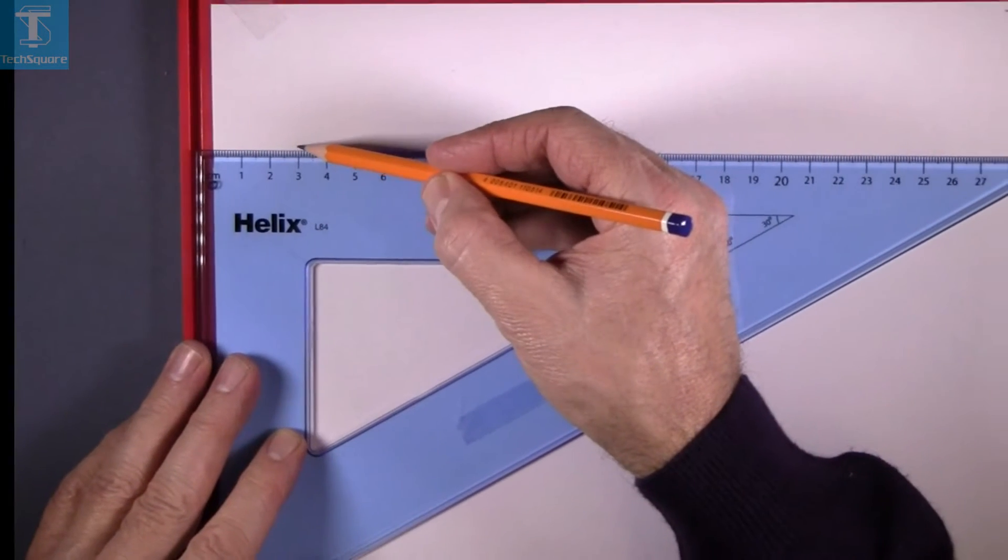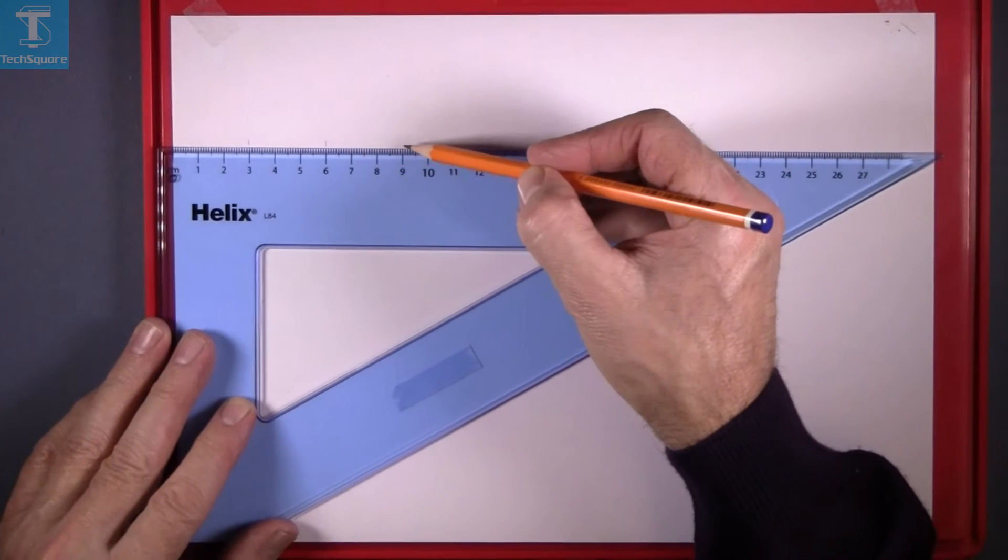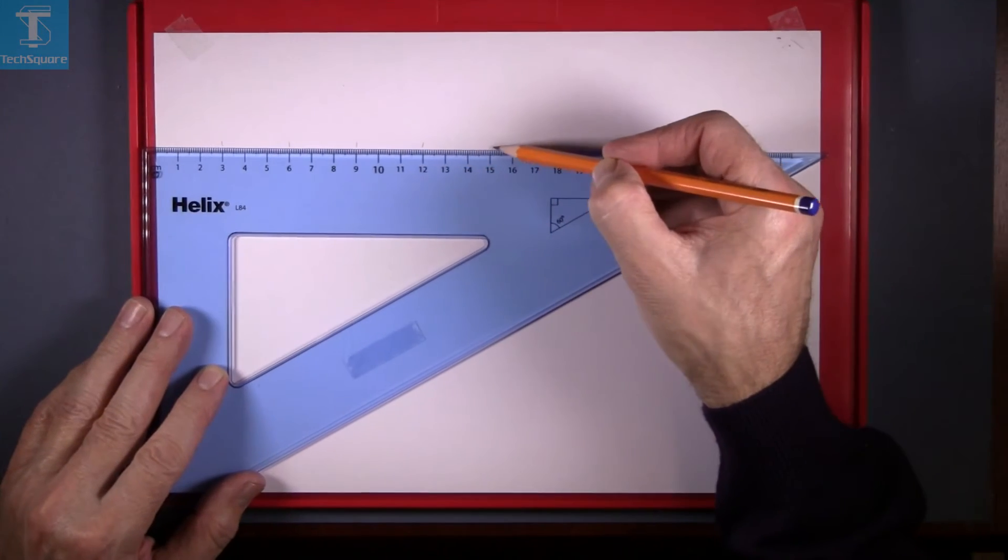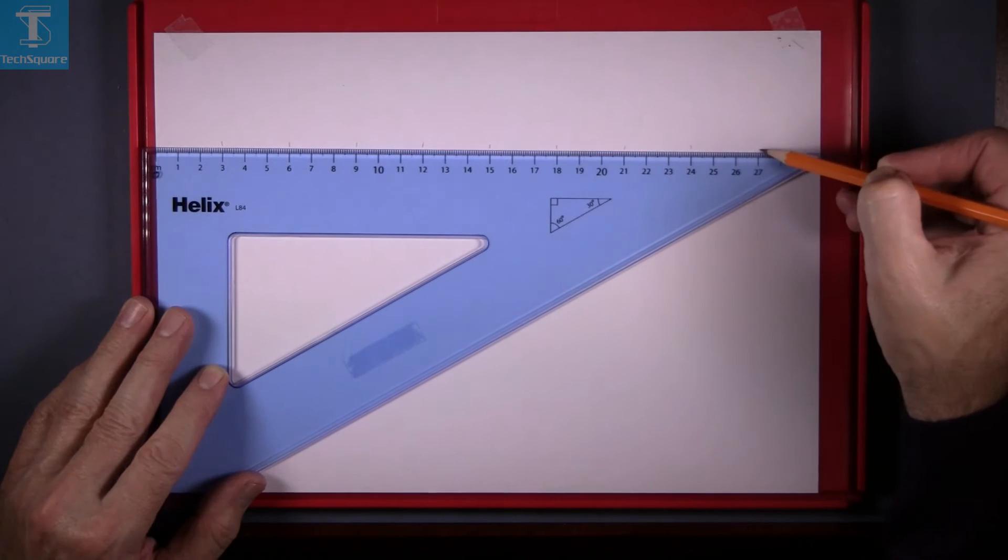Then mark off 3, 6, 9, 12, and so on, down to the full length of the sheet.